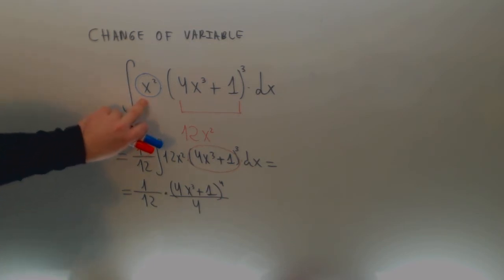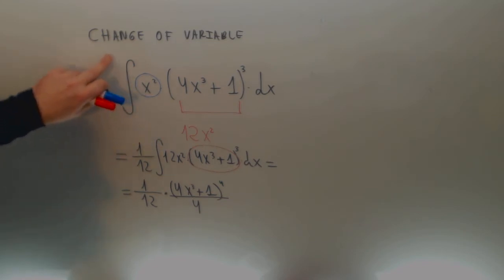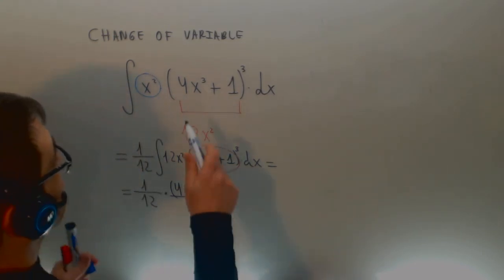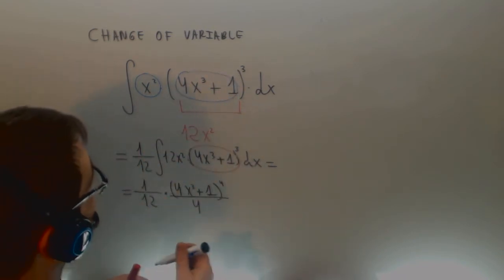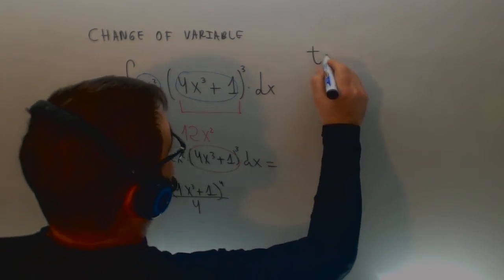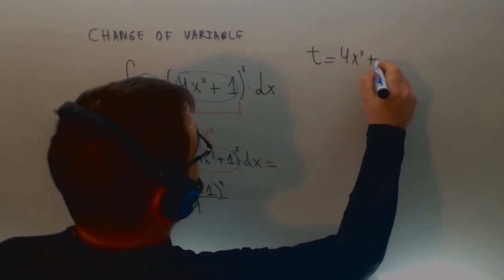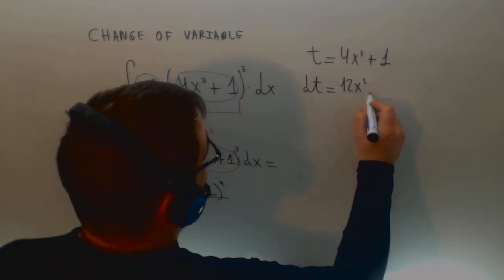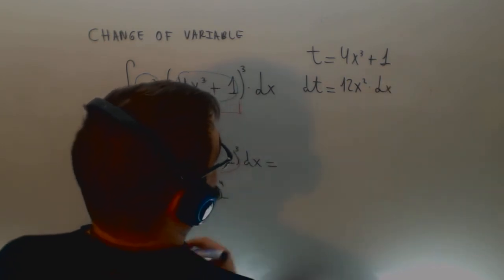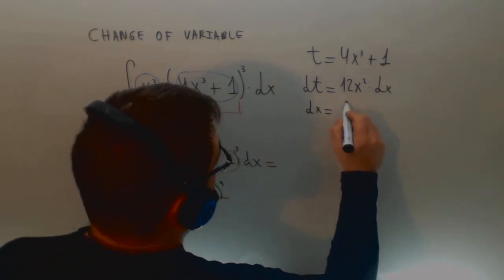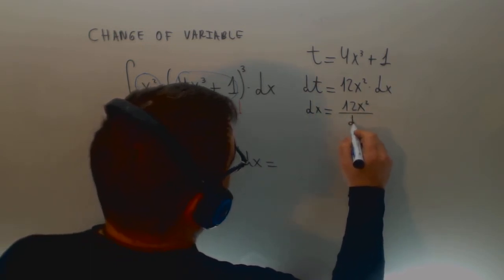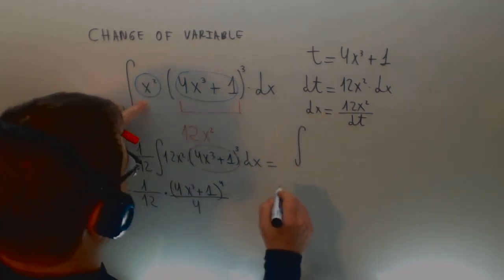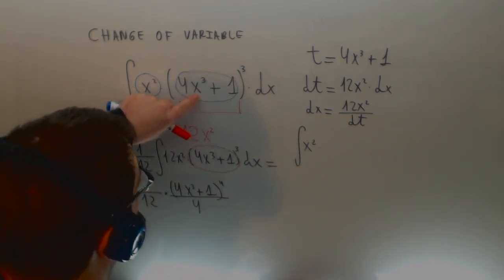That would be the integral if you see that you have the derivative of this expression. If you don't see that, you have to do the change of variable. How do you do it? You choose which function you are changing — this one. And now I can write t = 4x³ + 1, so dt would be the derivative of this: 12x² dx.